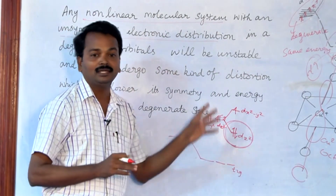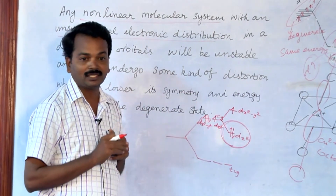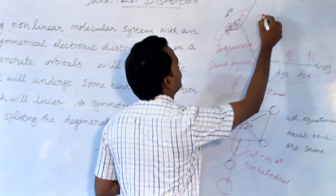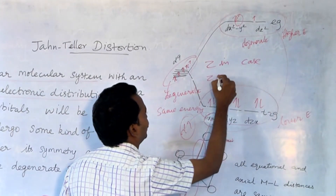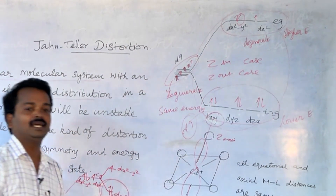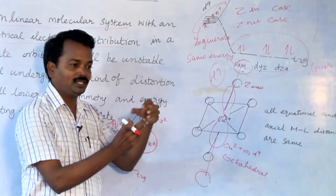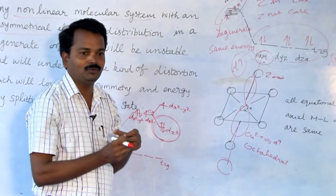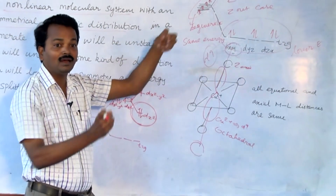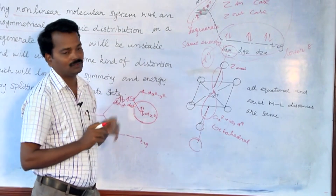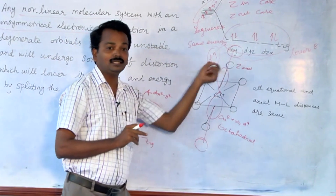In Jahn-Teller distortion we can see two cases: one is the Z-in case and another is the Z-out case. So far we have seen the Z-out case. In the Z-out case, we remove or partly remove the Z ligands in such a way that the octahedron is somewhat elongated — that is called the Z-out case.